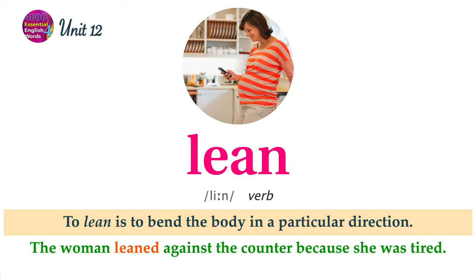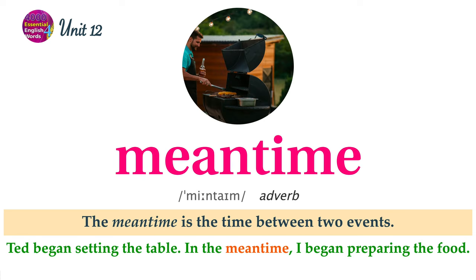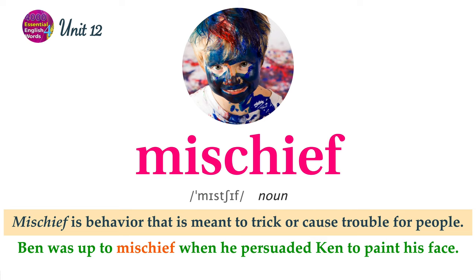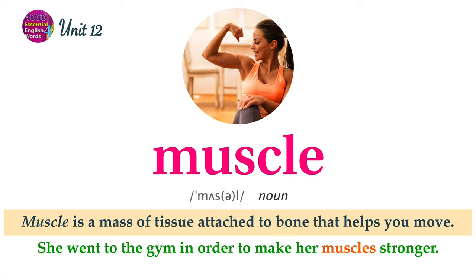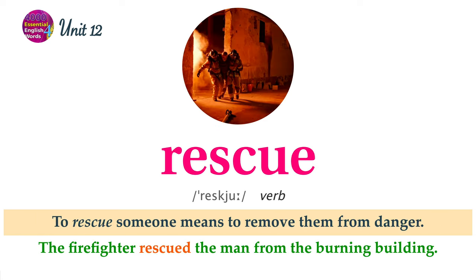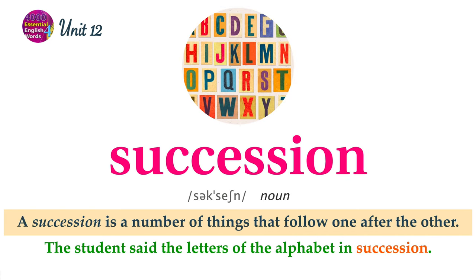To lean is to bend the body in a particular direction. The woman leaned against the counter because she was tired. The meantime is the time between two events. Ted began setting the table. In the meantime, I began preparing the food. Mischief is behavior that is meant to trick or cause trouble for people. Ben was up to mischief when he persuaded Ken to paint his face. Muscle is a mass of tissue attached to bone that helps you move. She went to the gym in order to make her muscles stronger. To rescue someone means to remove them from danger. The firefighter rescued the man from the burning building. A succession is a number of things that follow one after the other. The student said the letters of the alphabet in succession.